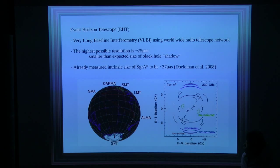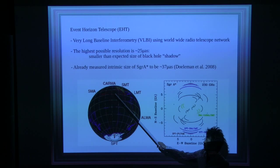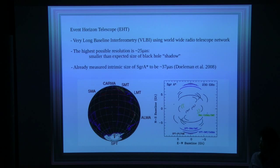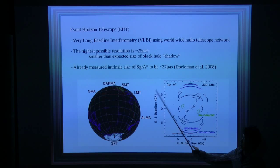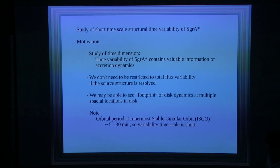With EHT, we should be able to see a shadow in 2017. Doeleman et al. 2008 already observed Sgr A* using EHT, but they had only three stations — CARMA, SMT, and SMA — so they couldn't really image it due to too-low UV coverage. They could, however, identify the intrinsic size of Sgr A* at about 37 micro-arcseconds, which is smaller than the size of the black hole shadow.